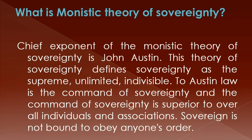The chief exponent of the monistic theory of sovereignty is John Austin. This theory defines sovereignty as supreme, unlimited, and indivisible. To Austin, law is the command of the sovereign, and this command is superior to all individuals and associations. The sovereign is not bound to obey anyone's order.